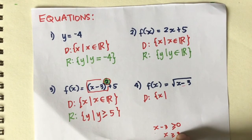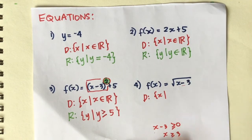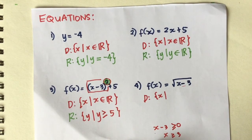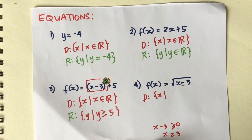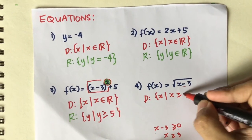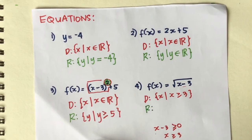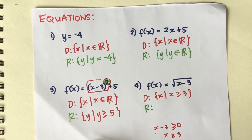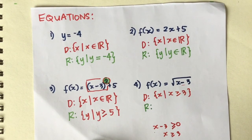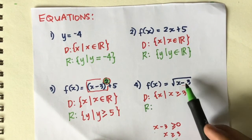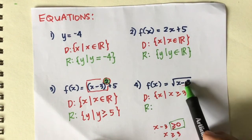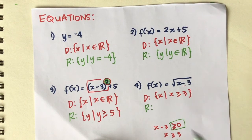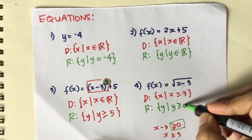You can use values like 4, 5, or 6, but not values less than 3. For example, if x is 1: 1 minus 3 is negative 2, and you cannot extract the square root of negative 2. So the domain is x such that x is greater than or equal to 3. The range depends on the resulting values after substituting the domain. Since the output of a square root is always positive or zero, the range is y greater than or equal to 0.